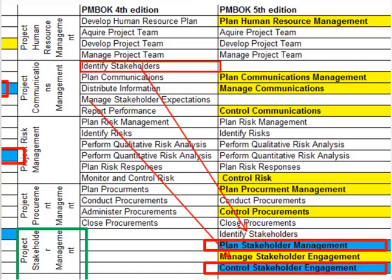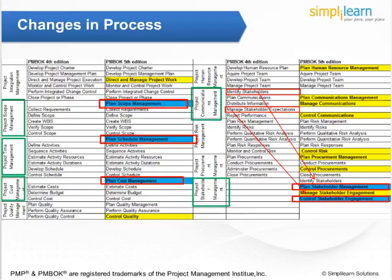The processes Identify Stakeholders and Manage Stakeholder Expectations have been moved from Project Communications Management to Project Stakeholder Management. Manage Stakeholder Expectations has been renamed as Manage Stakeholder Engagement. These are shown with red arrows. Finally, process names are modified to maintain consistency, which are highlighted in yellow. The next slide shows how processes are embedded between knowledge areas and process groups.